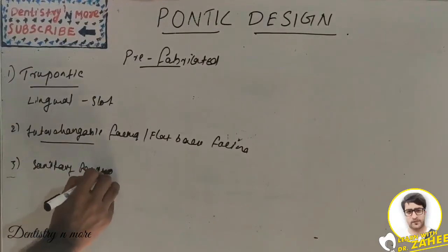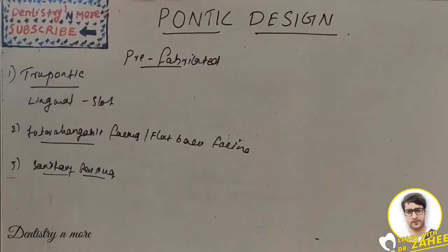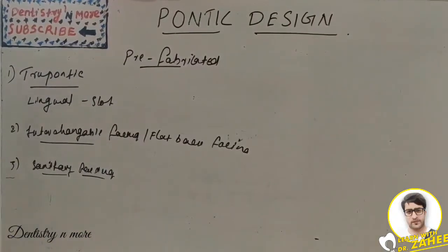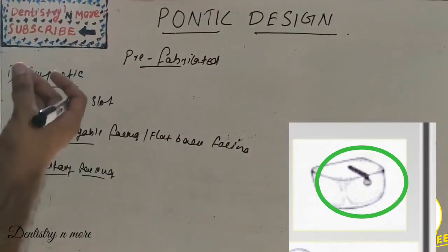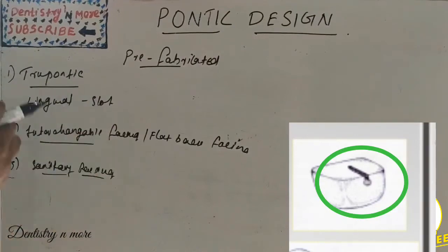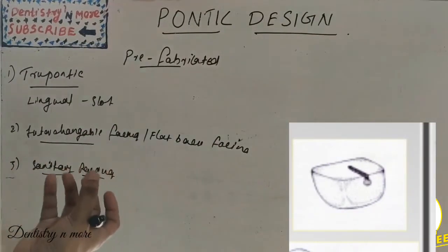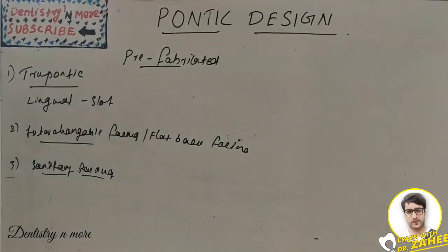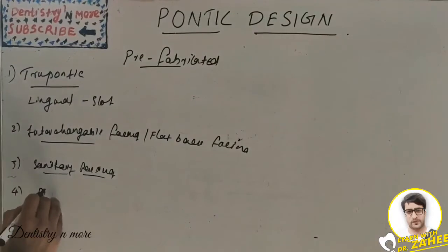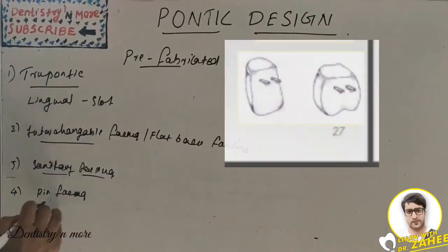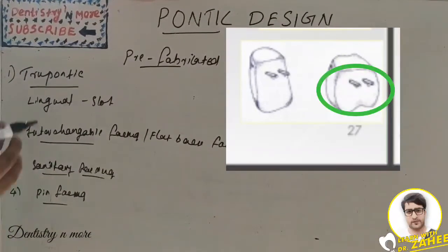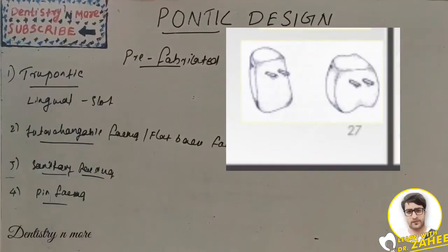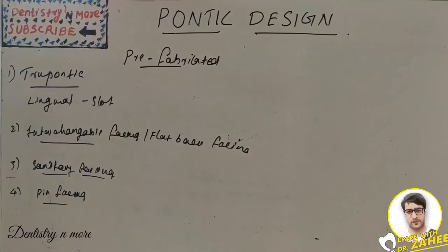Always draw pictures when writing answers about pontics, as horizontal, vertical, and other details can be confusing. The sanitary facing has a flat occlusal surface with a slot on the proximal surface to receive pins from the FPD. The fourth type is the pin facing pontic, which is a flat lingual facing with two horizontal pins for retention — the pins are already built into the pontic.